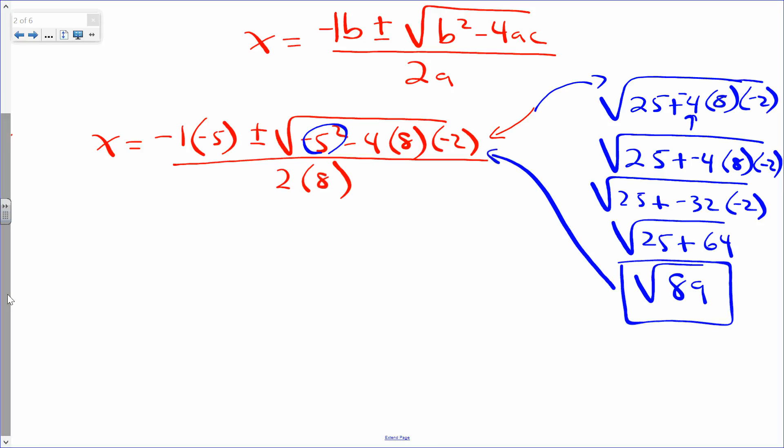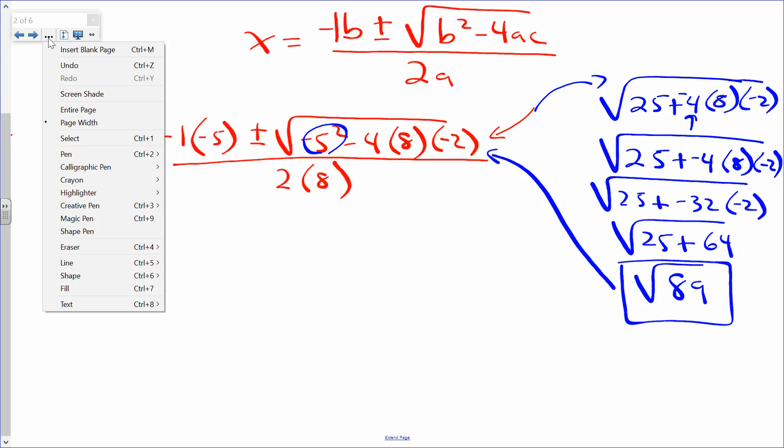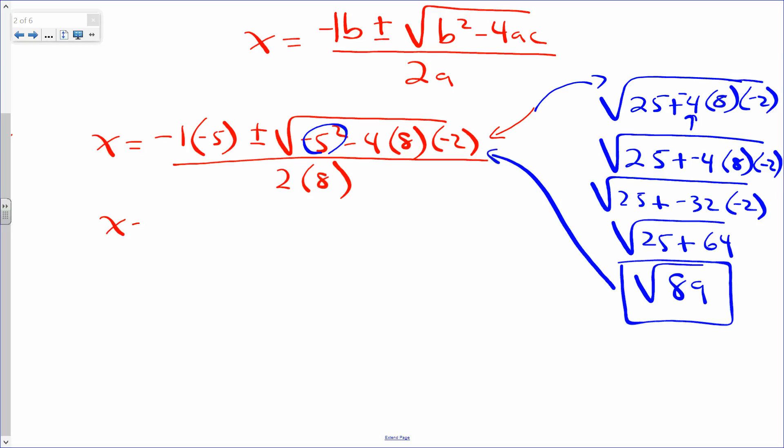So let's go ahead and rewrite this now. We have x equaling negative times negative to the positive 5 plus and minus the square root of 89 all over 16. And we're done.